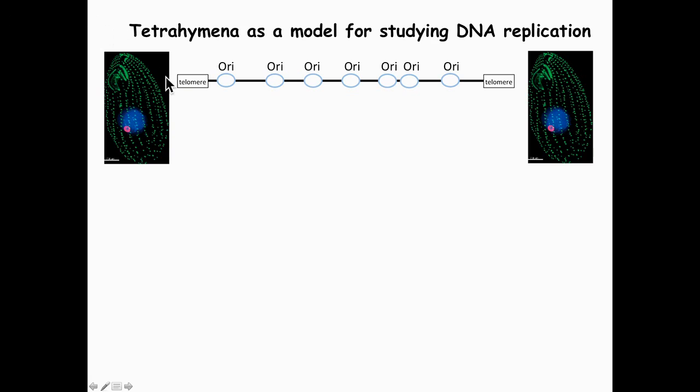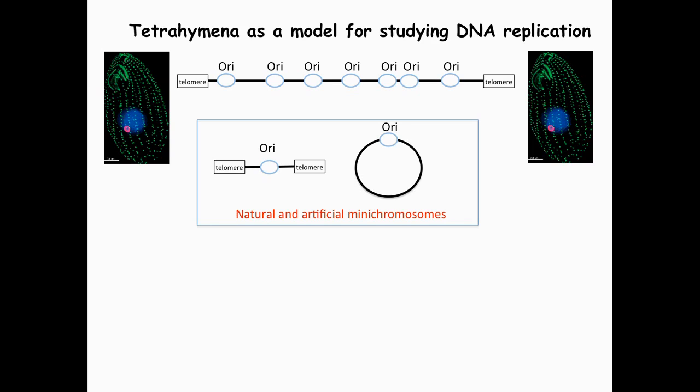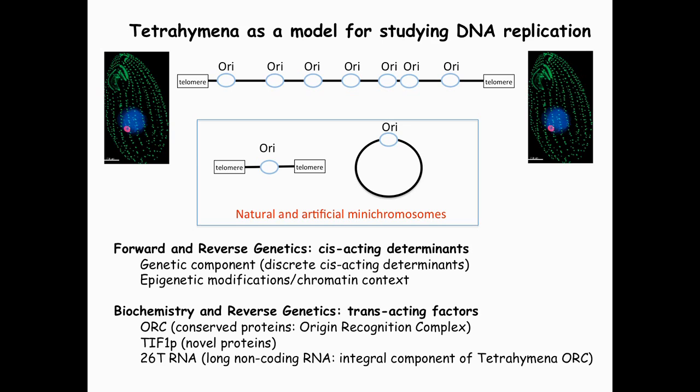Replication initiates at specific sites in chromosomes termed origins of replication, and these initiation events are regulated by the recruitment of factors that allow for site-specific initiation of DNA replication. One of the advantages of working with Tetrahymena is that it harbors both natural and artificial mini-chromosomes, which allows us to explore the genetic composition and context of DNA sequences in chromosomes that are replicated. We've used forward and reverse genetic approaches to identify cis-acting regulatory determinants and specific DNA sequences that control replication initiation.